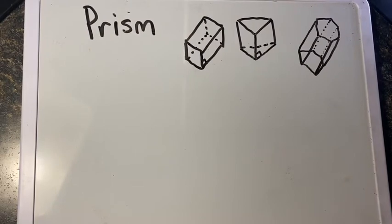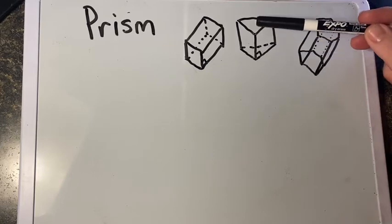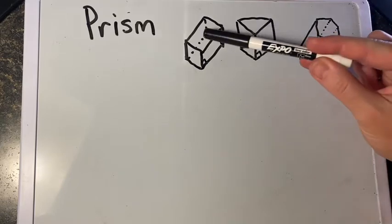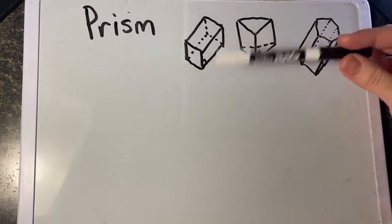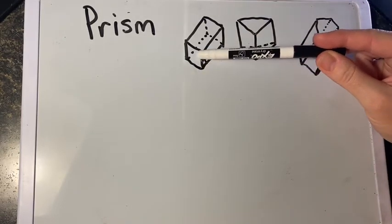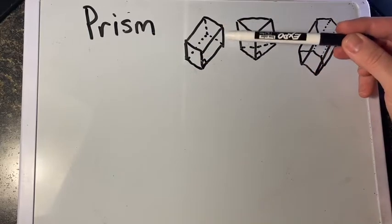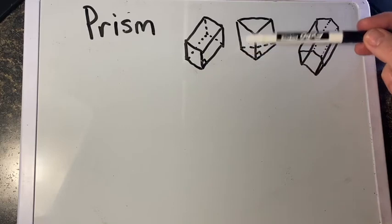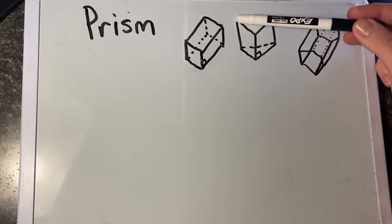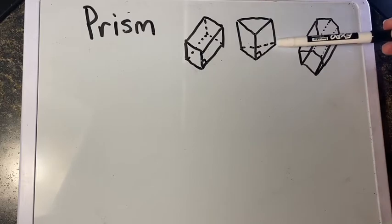We're going to start our lesson with prisms. A prism has two bases — we can call it the top and the bottom. Two bases. The segments connecting the corresponding vertices of a prism are called lateral edges. So all the pieces moving from a vertex of a base to the other base are called lateral edges.